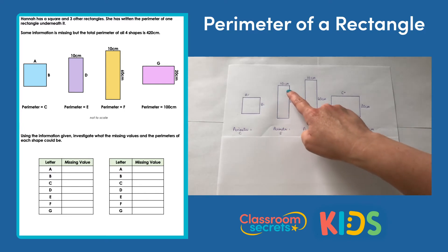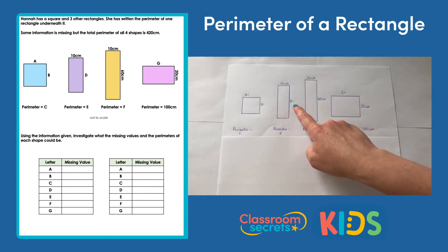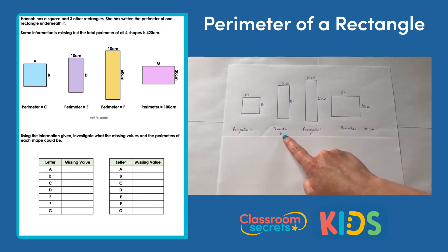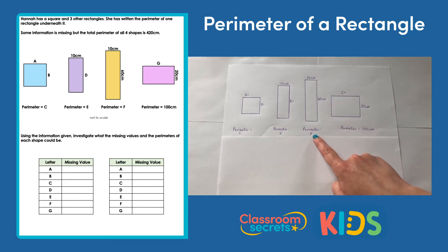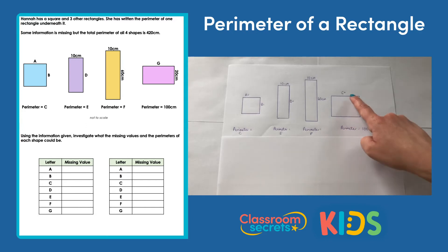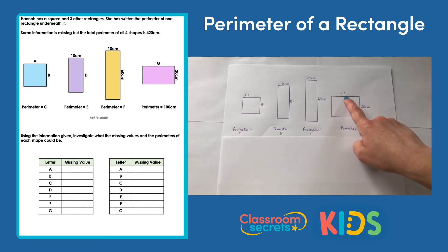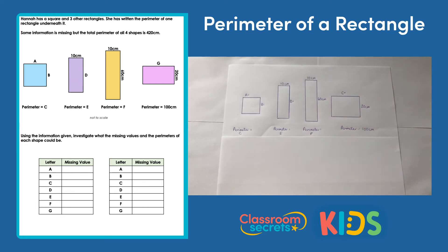Then my second shape — I have D as the missing value, and the perimeter is E. Then for this shape, the perimeter is F. And for our final shape, this length here is G. So we're looking for our missing values A all the way through to G. It looks like a lot of information, but what we need to do is look at what we can use first.